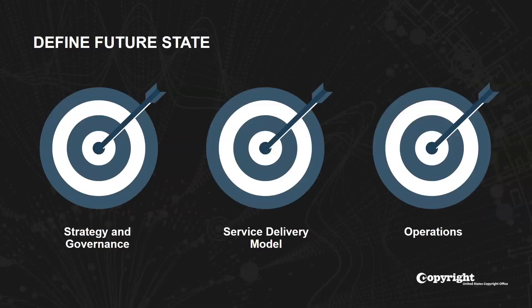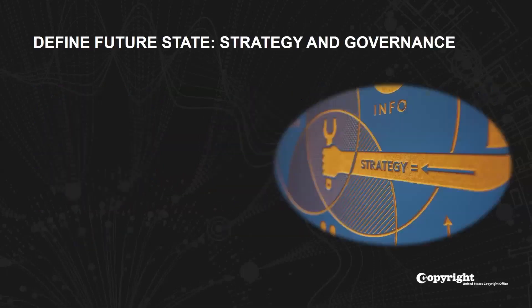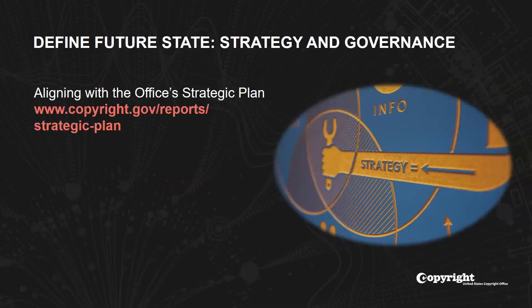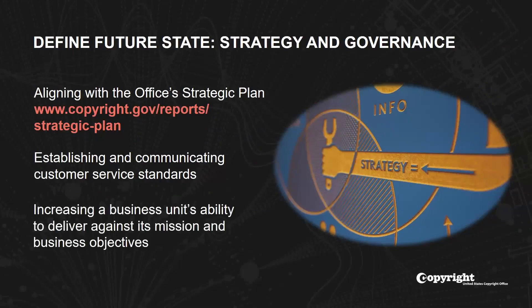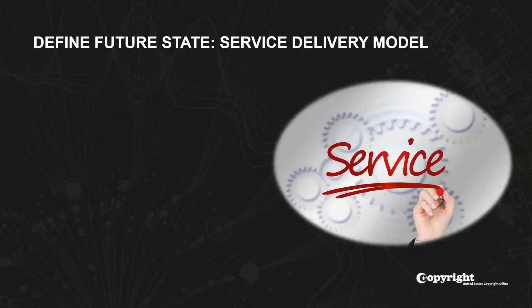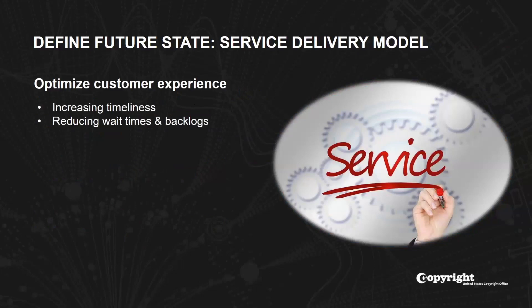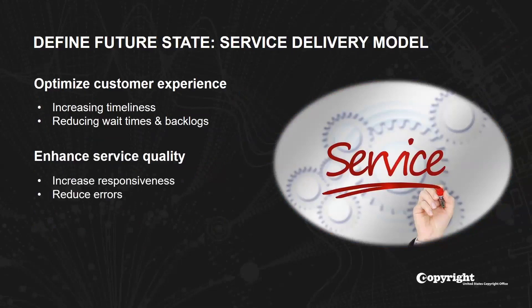We define the future state with an eye to strategy and governance, the service delivery model, and operations. For strategy and governance, we look to create improvements in aligning with the office's strategic plan and the overall modernization roadmap, establishing and communicating customer service standards, specifically timelines for action, measuring performance against standards, and increasing a business unit's ability to deliver against its mission and business objectives, such as shorter processing times. The service delivery model involves optimizing customer experience through increased timeliness of service delivery, reducing work backlogs and decreasing customer wait times. Enhanced service quality also involves increasing office responsiveness to customers and reducing errors, working together to create a transparent customer experience.